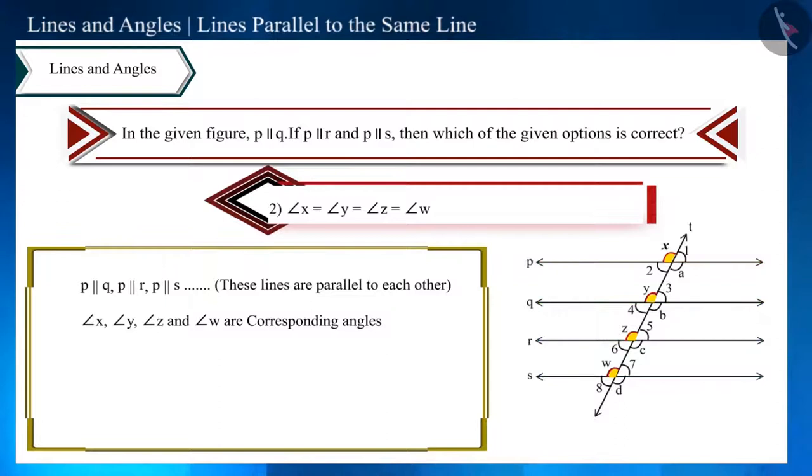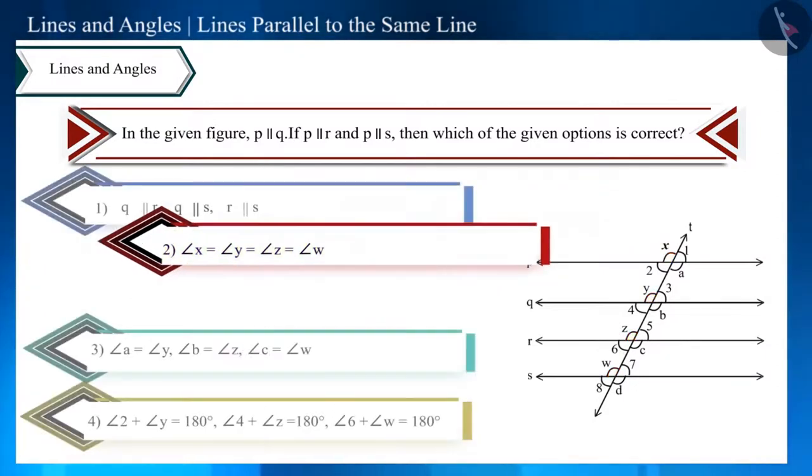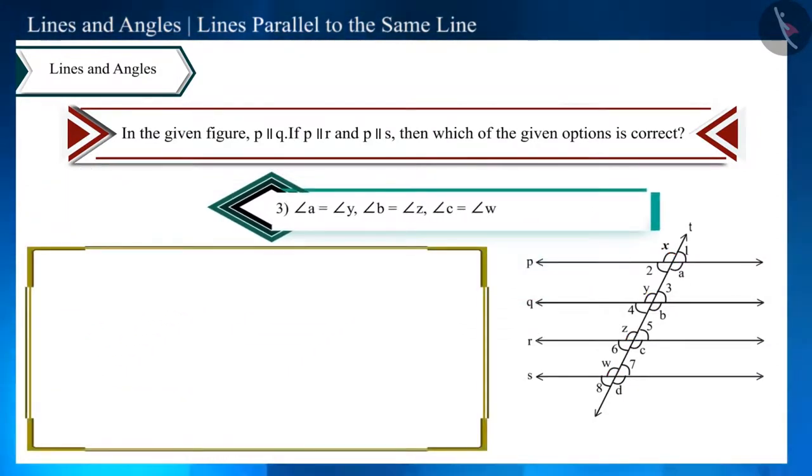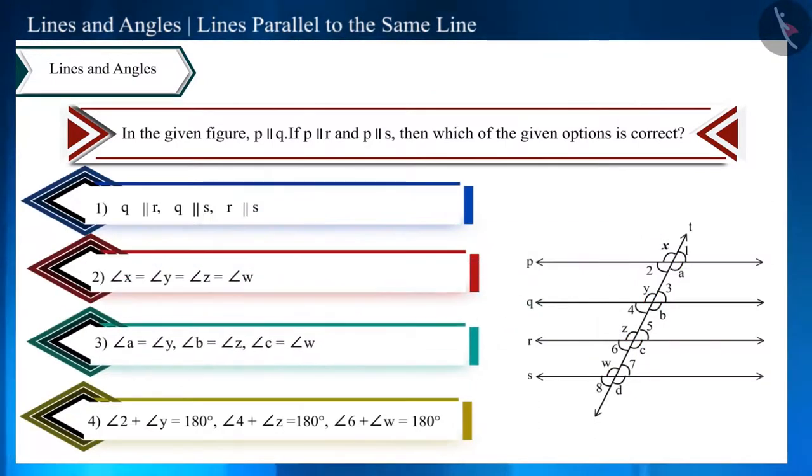Now look at the third option. Here these angles are equal to each other. Look at the figure carefully. These angles are pairs of alternate angles, and the pair of alternate angles are equal to each other. Therefore, this option is also correct.